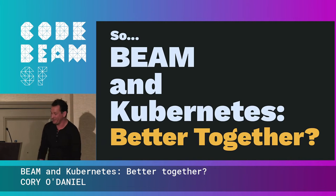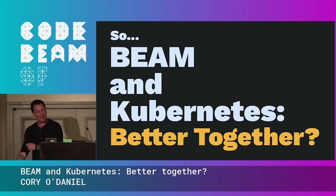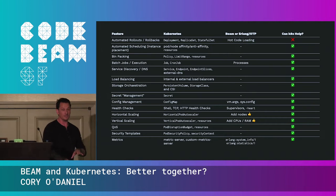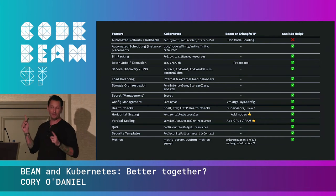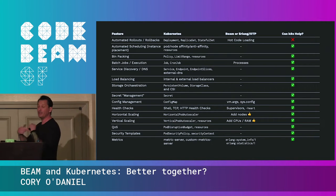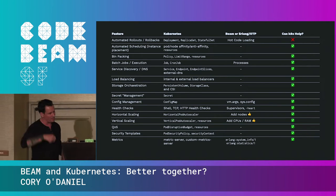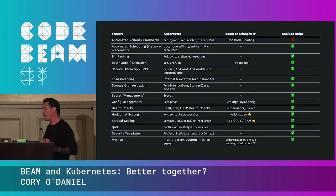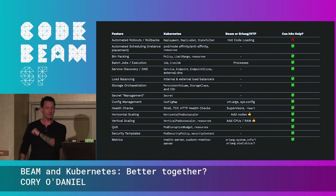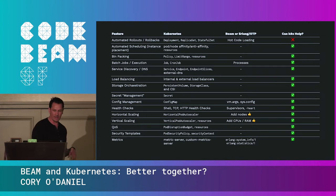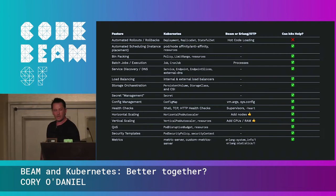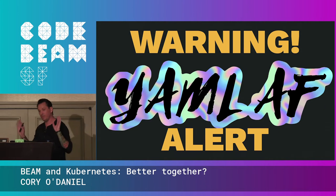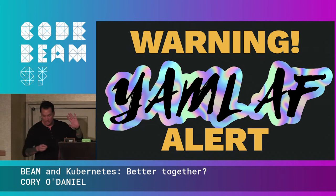Let's take that consultant hat off for a second and do some nerdy stuff. BEAM and Kubernetes better together — that's what we're here to talk about. We come back to this big wall of features. We're not going to hit all of them, but I want to point out a couple of emojis showing what I think Kubernetes can help with, and the one thing Kubernetes can't help with: hot code loading. We're going to focus on specific ones today.